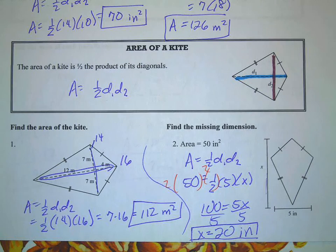So rhombi and parallelograms and kites are pretty easy. Okay. That's really all there is to that.